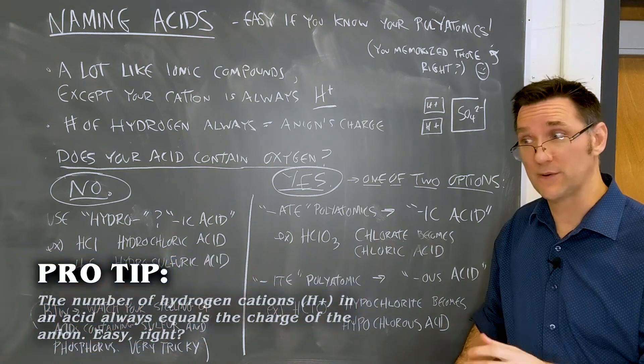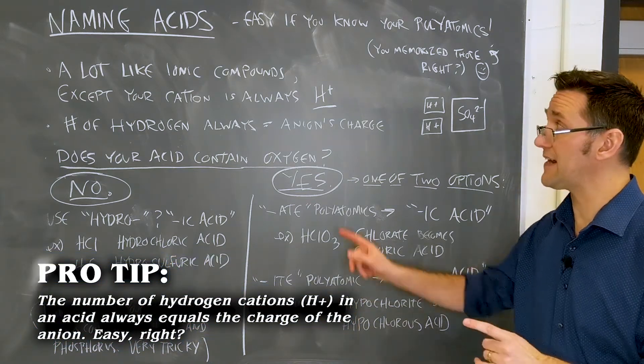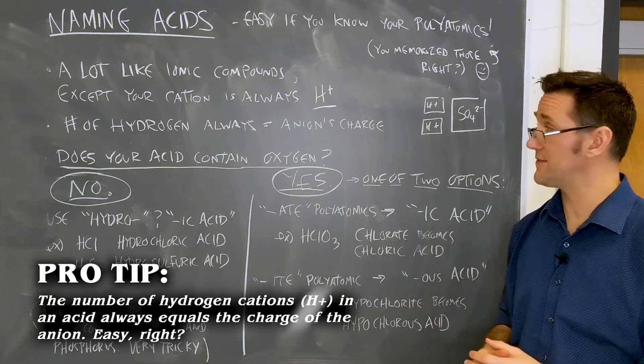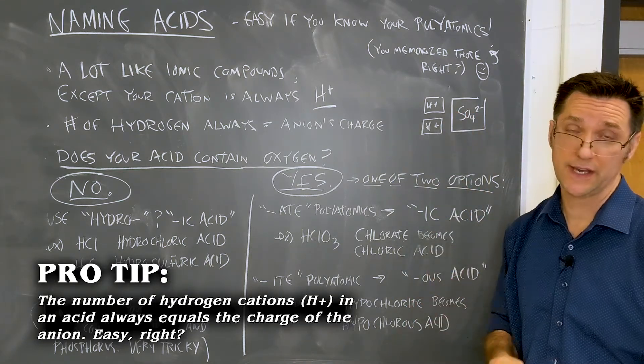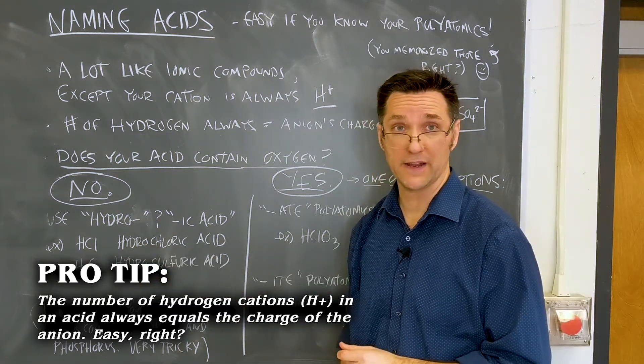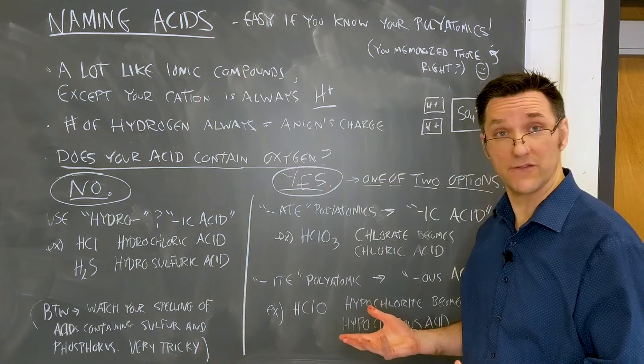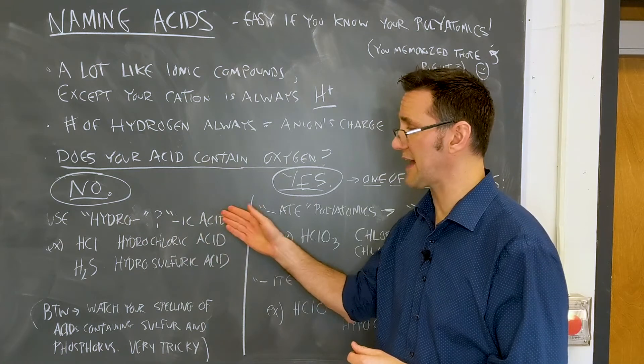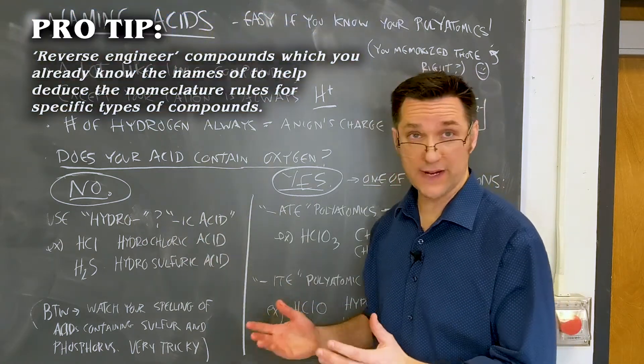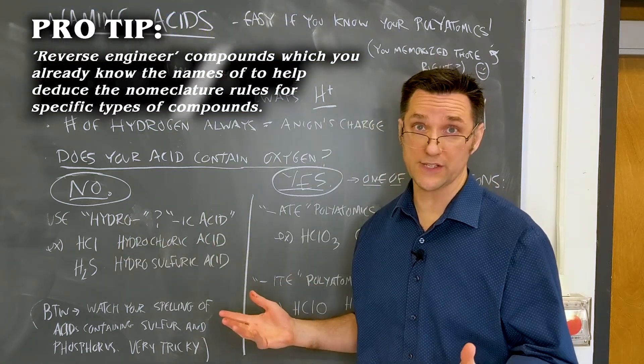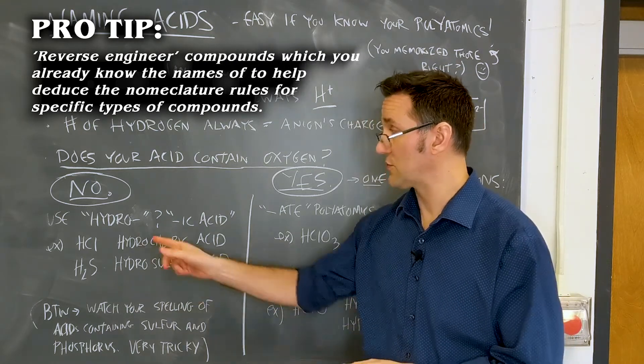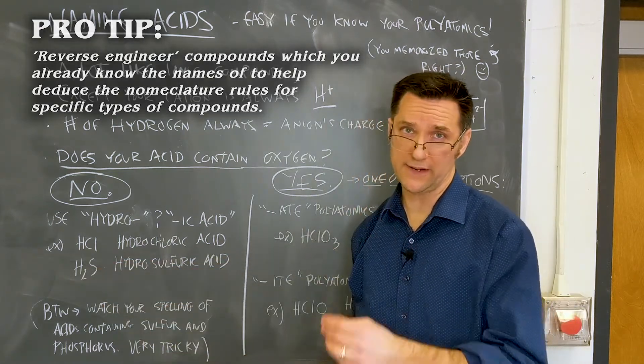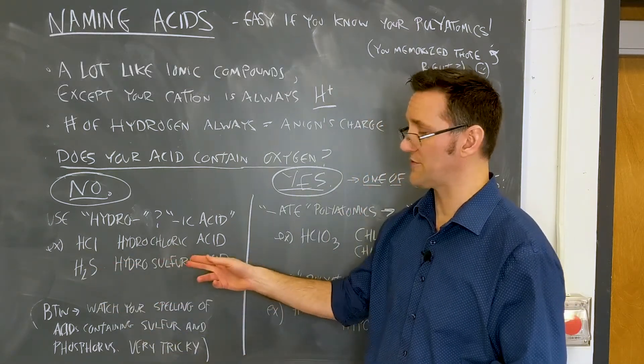Acids are very straightforward. They're really essentially ionic compounds in water, and the cation is always H+. The number of H+ ions you need are equal to the charge of the anions. So just ask yourself, does this acid contain oxygen? If it doesn't, then you're going to use the hydro-whatever-ic acid format. Chloride has a minus 1 charge, so I'll need one hydrogen, hydrochloric acid. S2 minus, I'll need two hydrogens, hydrosulfuric acid.